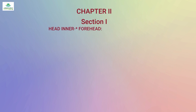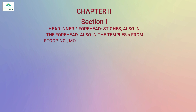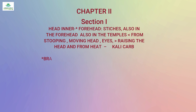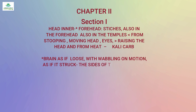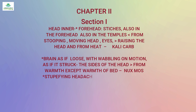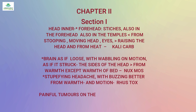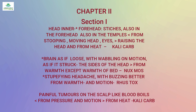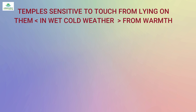Some rubrics from Chapter 2: 'Stitches in the forehead, also in the temples, worse from stooping and moving the head, better from raising the head and from heat' — Kali carb; 'Brain as if loose with wobbling on motion, as if stuck to the sides of the head, better from warmth except warmth of bed' — Nux moschata; 'Stupefying headache with buzzing, better from warmth and motion' — Rhus tox; 'Painful tumours on the scalp like blood boils, worse from pressure and motion, better from heat' — Kali carb; 'Temples sensitive to touch from lying on them, worse in wet cold weather, better from warmth' — Nux moschata.